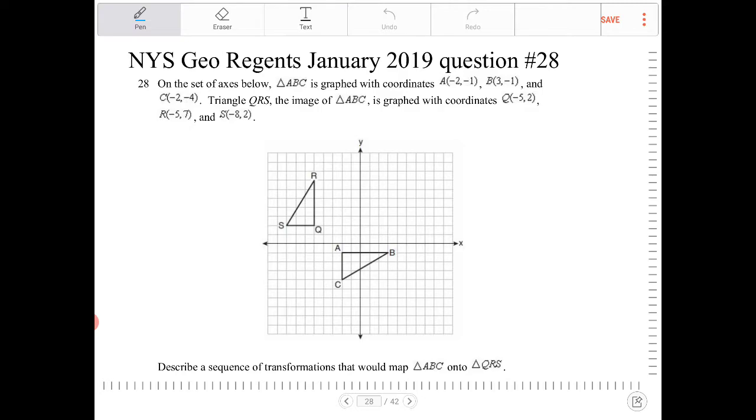Triangle QRS, the image of triangle ABC, is graphed with coordinates Q(5, 2), R(5, 7), and S(8, 2). Describe a sequence of transformations that would map ABC onto QRS.